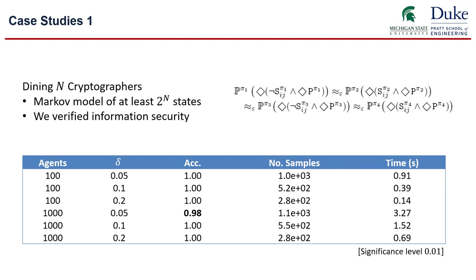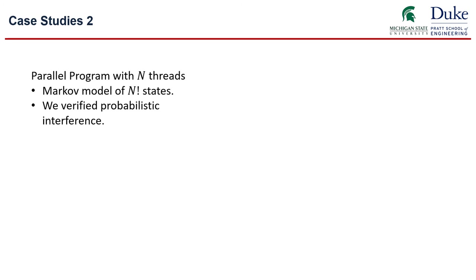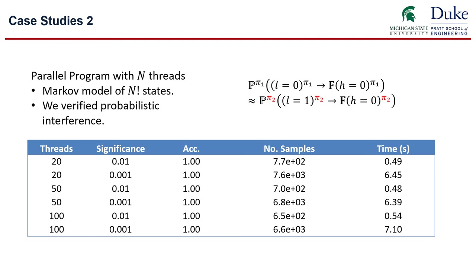The second case study is on verifying the probabilistic interference of variables in a parallel program with n threads. Here, again, the probabilistic interference specification can be captured by hyper PCTL star like this. And for programs with different number of threads, we show that there is indeed a probabilistic interference. To validate the statistical accuracy of hyper SMC, we also made empirical estimation of its accuracy and compare it with the nominal significance level. As you can see, they agree very well.